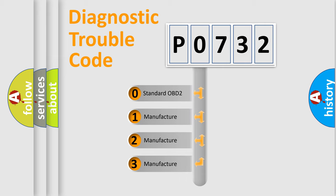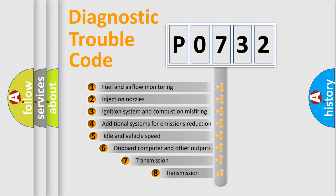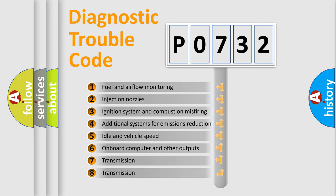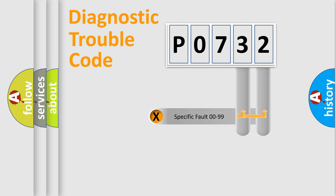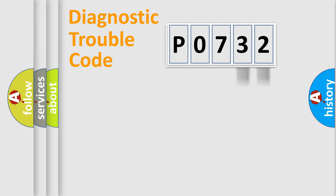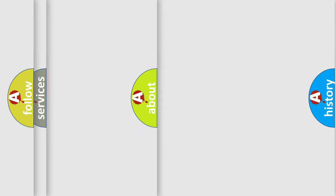If the second character is expressed as zero, it is a standardized error. In the case of numbers 1, 2, or 3, it is a more specific expression of a car-specific error. The third character specifies a subset of errors. This distribution is valid only for the standardized DTC code, and only if the second character is expressed by the number zero.